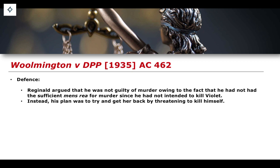His plan was to try and get Violet back by threatening to kill himself. His argument was: I went to the house with the shotgun, I was going to point the gun at myself and threaten to kill myself unless Violet came back and resumed our relationship. And so, in the course of events, the gun accidentally fired and he had accidentally shot his wife Violet.